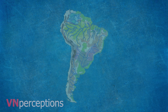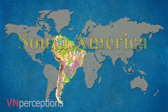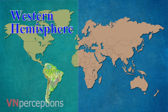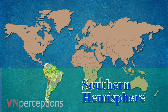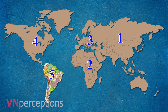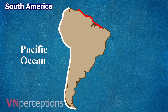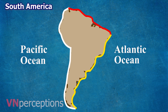In this video, we shall learn the physical features of South America. South America is a continent in the Western Hemisphere, mostly in the Southern Hemisphere, with a relatively small portion in the Northern Hemisphere. It is the fourth largest continent in size and the fifth largest in population. It is bordered on the west by the Pacific Ocean and on the north and east by the Atlantic Ocean. North America and the Caribbean Sea lie to the northwest.